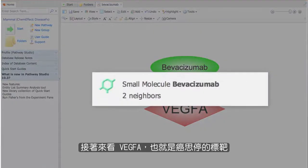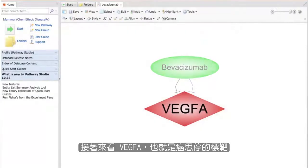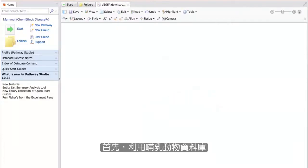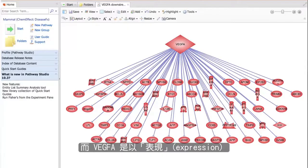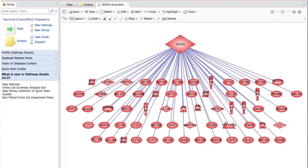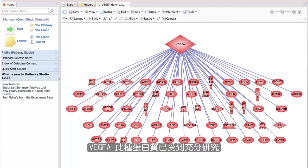Let's look at the target of Bevacizumab, VEG-FA. First, using the mammalian database, we will find downstream protein targets that VEG-FA negatively regulates, using the relationship types of expression and direct regulation. You can see by the number of relations, VEG-FA is a well-studied protein.